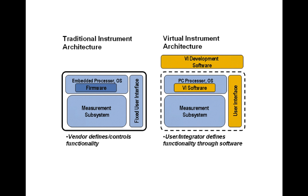Comparing a traditional instrument with a virtual instrument architecture, both have almost the same components: an OS and a measurement system. The key difference is that the software is customizable — you define the mask (front panel) for that particular instrument using virtual instrumentation development software. A bare instrument with only hardware is called a naked instrument. Once you develop the front panel for it using software, it becomes a complete instrument.